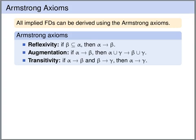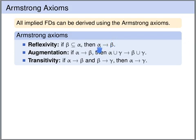One way to check whether a functional dependency is implied are the Armstrong axioms. There are three Armstrong axioms for functional dependencies. The first is reflexivity: if beta is a subset of the set of attributes alpha, then we always have that alpha uniquely determines beta. If you have some attributes on the left-hand side and the right-hand side is a subset, then clearly the left uniquely determines the right.